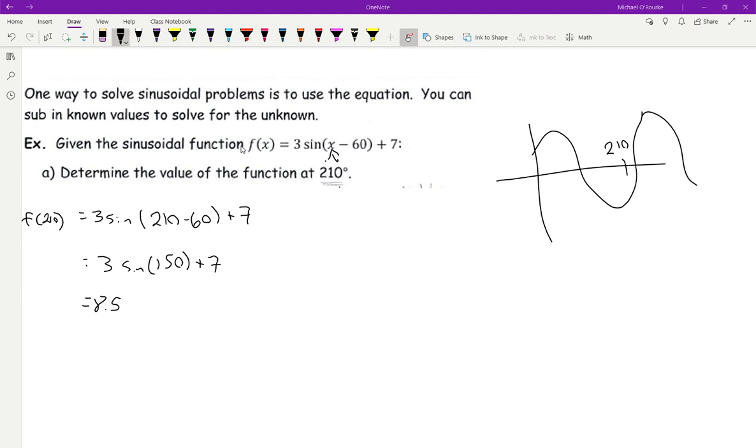So what it's asking here is this is my function, right? This is my equation. And x here is in degrees. 0 degrees, 90 degrees, 180, and so on. So it's telling you along this x, what's my result when I'm at 210 degrees? So we take that 210 and substitute it into the equation for x. Here we did 210 minus 60, because that was in there.